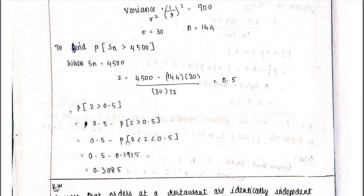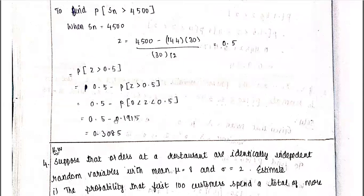From the diagram, P(Z > 0.5) = 0.5 − P(0 ≤ Z ≤ 0.5). From the table, P(0 ≤ Z ≤ 0.5) = 0.1915. So the answer is 0.5 − 0.1915 = 0.3085, which is our required probability.